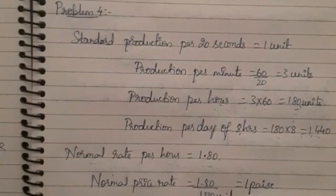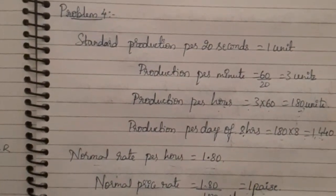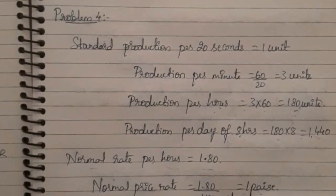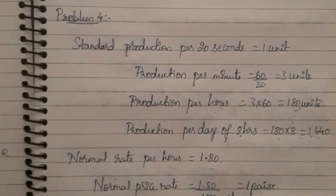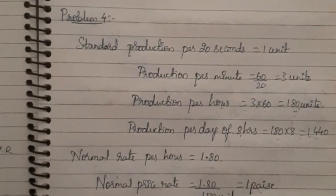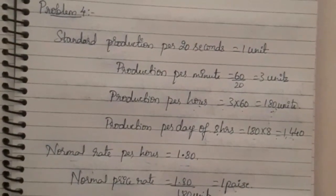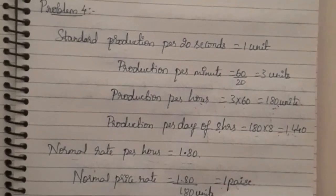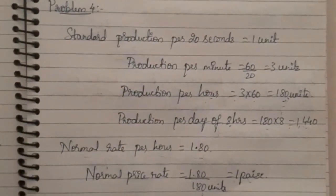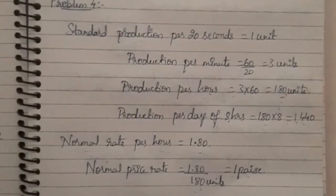Now we calculate Taylor's differential rates. The low piece rate — applied below standard production — is 1 paise into 80 percent, which equals 0.8 paise. The high piece rate — applied at or above standard — is 1 paise into 120 percent, which equals 1.2 paise.